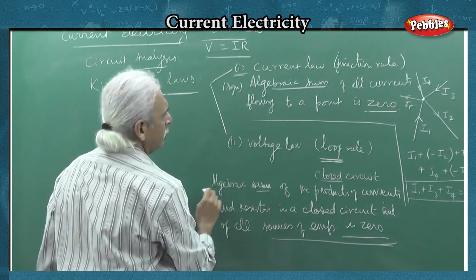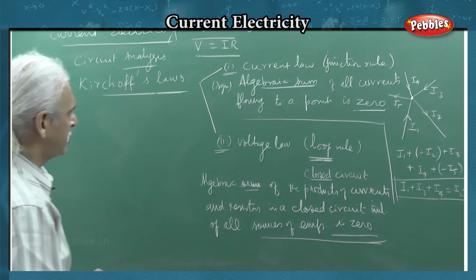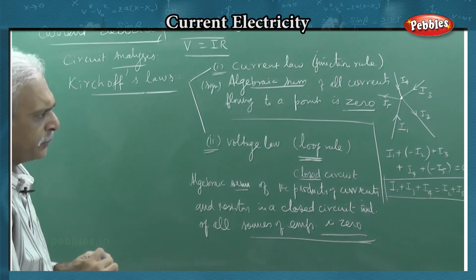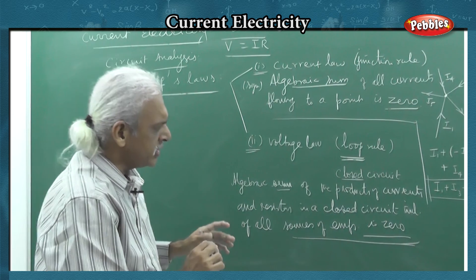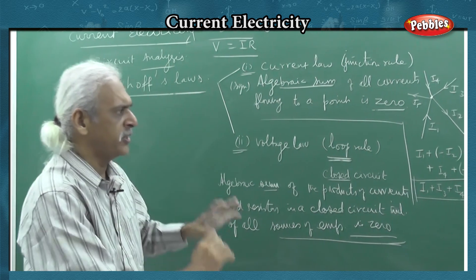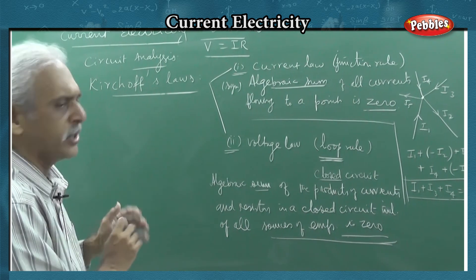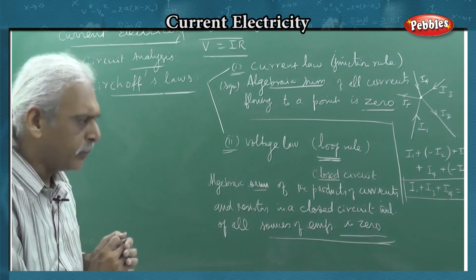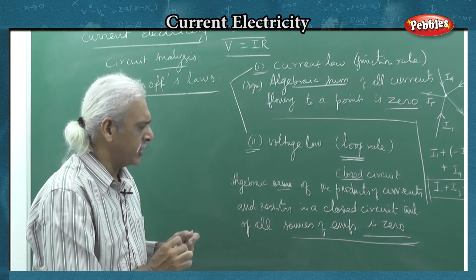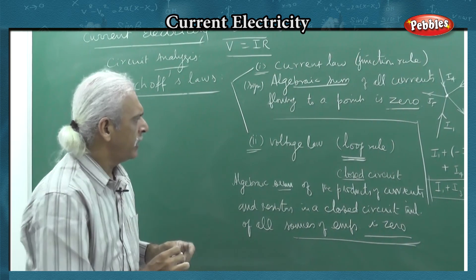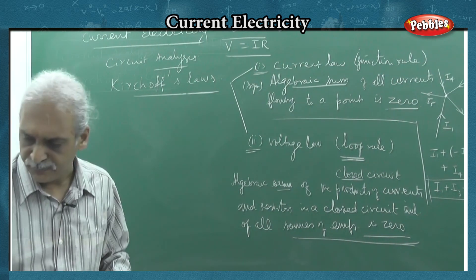So: current law — law one; voltage law — law two. Let's take an illustration. The circuit given in the book itself — that is the illustration circuit. We will be able to study it using the circuit in the book.